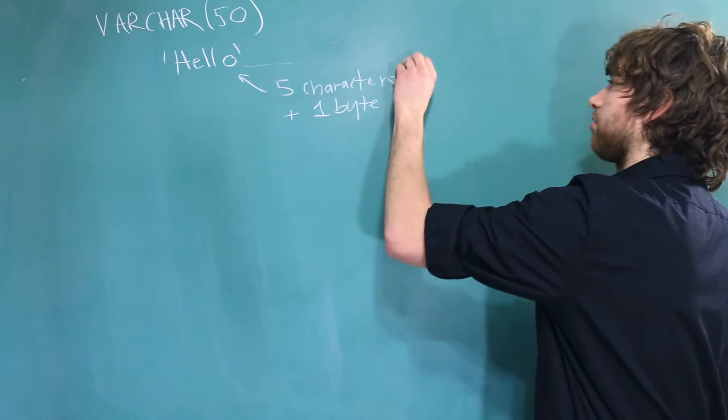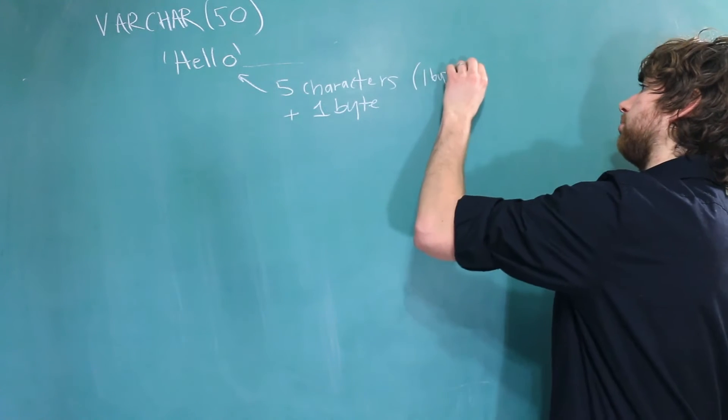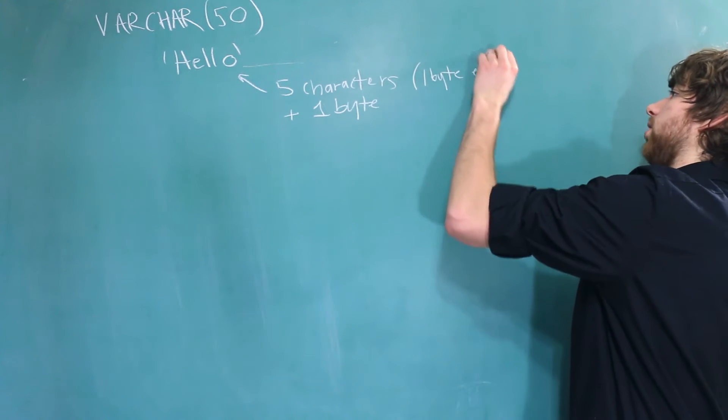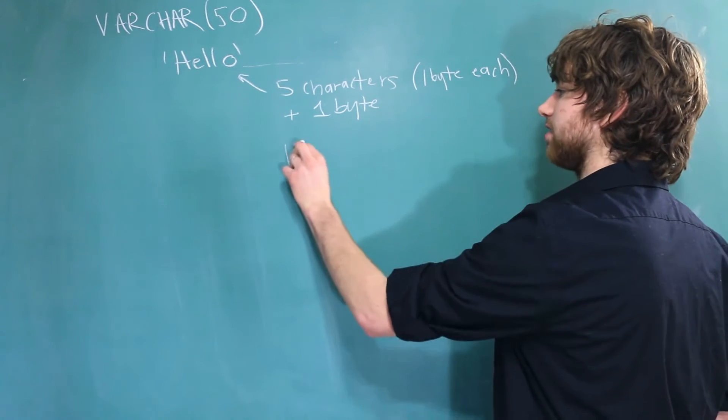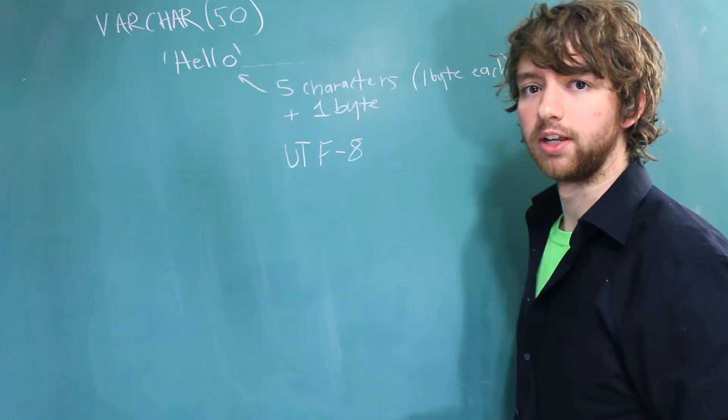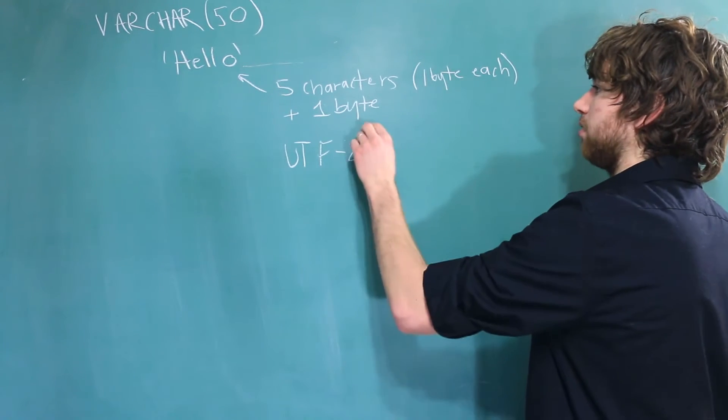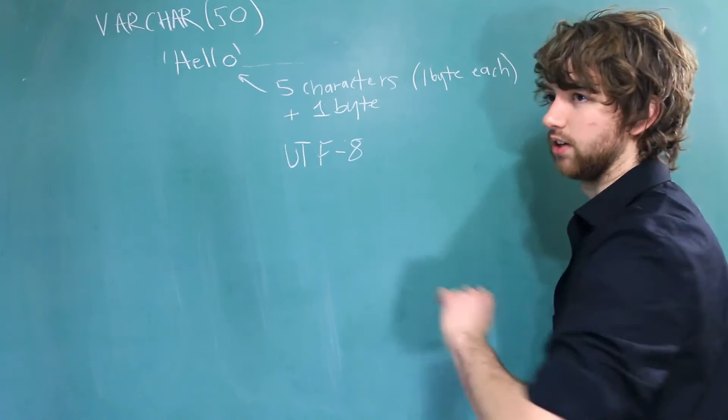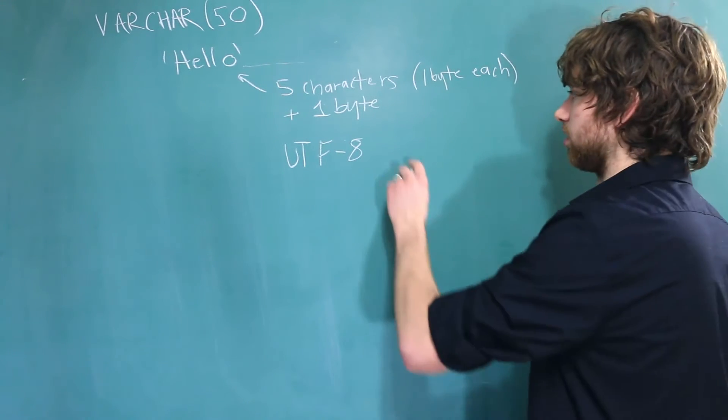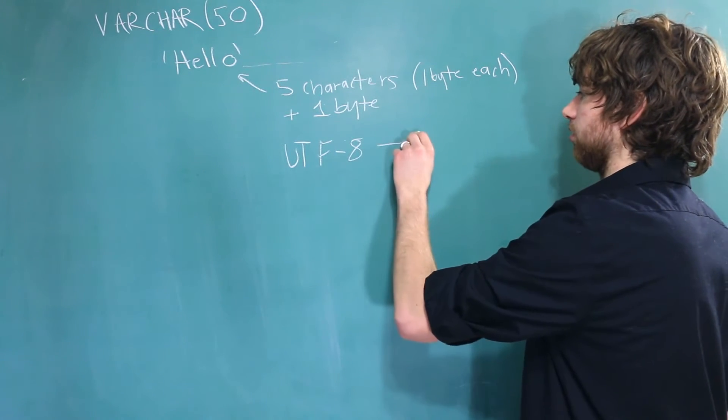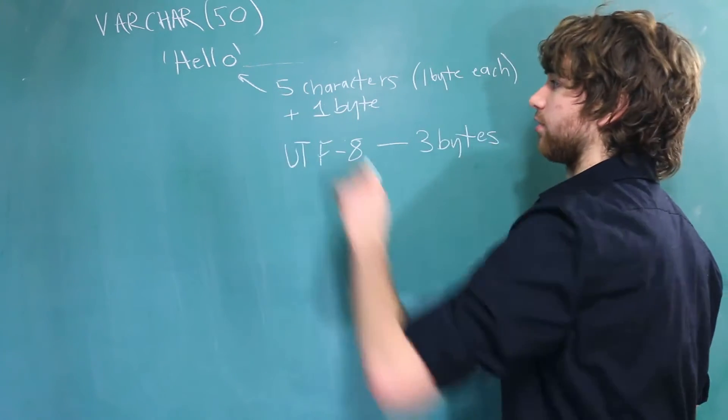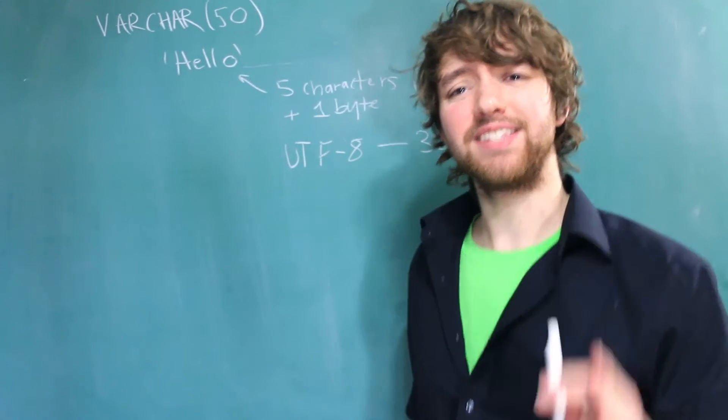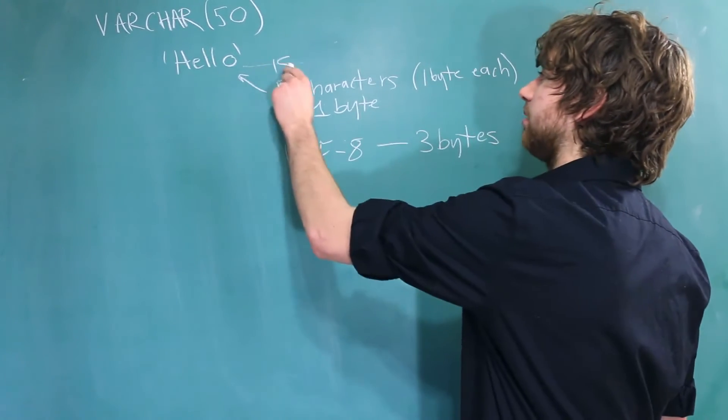So this would be 5 characters plus 1 byte. Now in this situation, each character is probably 1 byte each, but do keep in mind different encodings. UTF-8 is a very common one that allows for multiple different languages. English is going to be 1 byte each, but once you get into like Asian characters or some other languages, you are going to have up to 3 bytes each in MySQL. So this 5 character string could be up to potentially 16 bytes. It would be 15 plus 1.